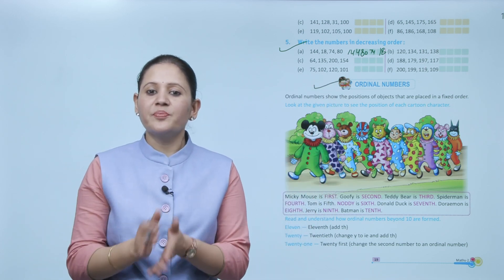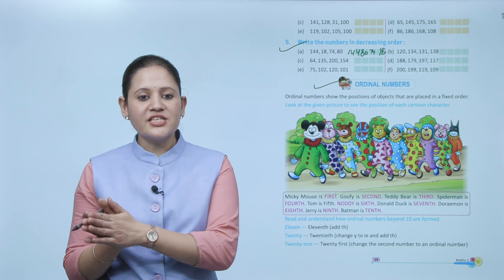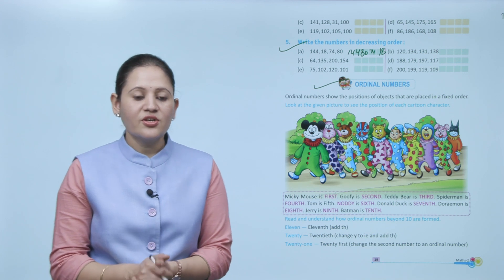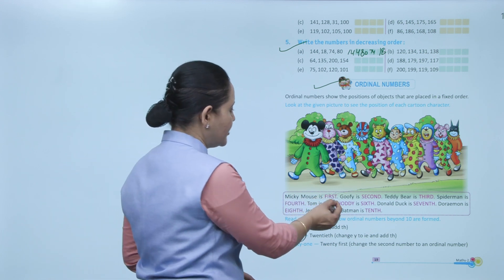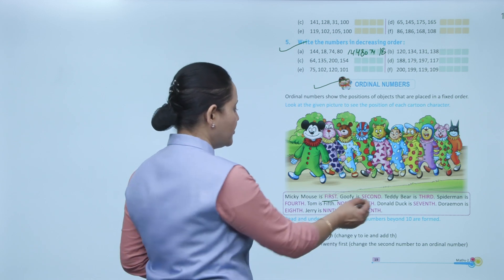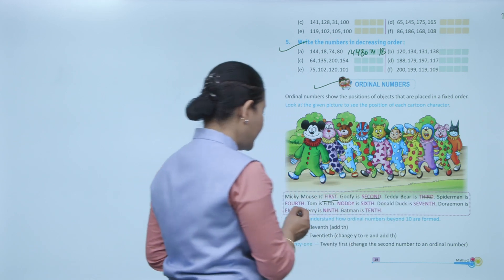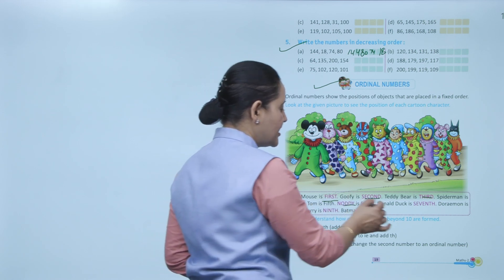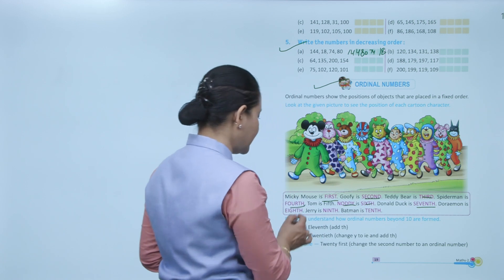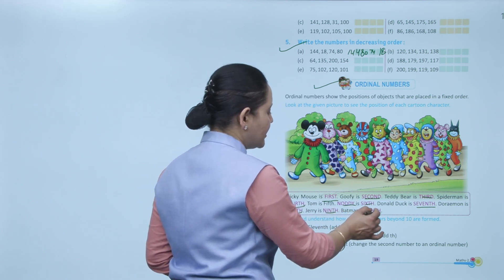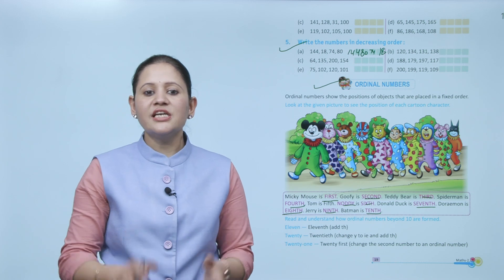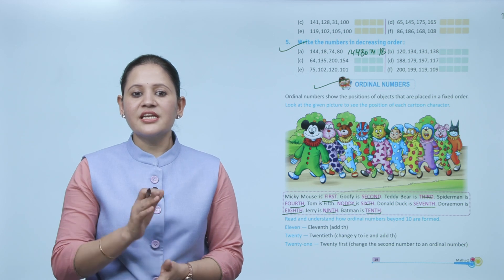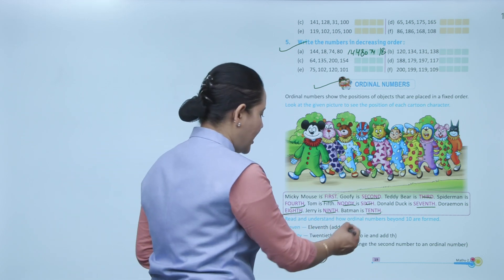Next: ordinal numbers. Ordinal numbers show the position of an object placed in a fixed order. Look at the given picture: Mickey Mouse is first, Goofy is second, Teddy Bear is third, Spider-Man is fourth, Tom is fifth, Naughty is sixth, Donald Duck is seventh, Doraemon is eighth, Jerry is ninth, and Batman is at the tenth position. After 10, we read 11th — adding 'th'.